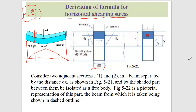Consider two adjacent sections, section 1 and section 2, on this beam separated by distance dx, as shown in the figure. Let the shaded part between them be isolated as a free body diagram. If you consider the area up to a certain point, the stress diagram looks like that — as you already understand from the last class on how to draw the stress diagram.